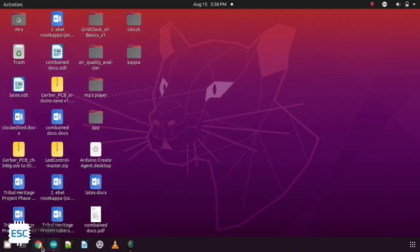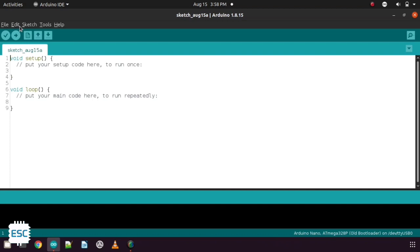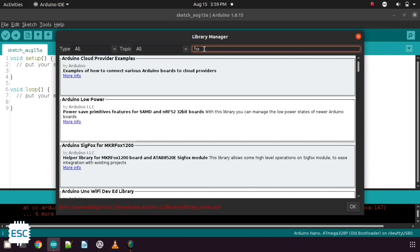Now open Arduino IDE. Now go to sketch, include library, then manage library and search for HX711 ADC. And install the library.